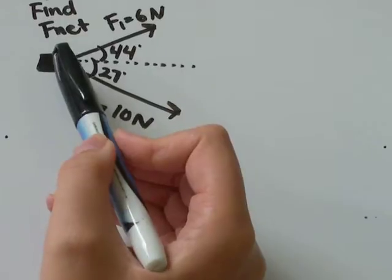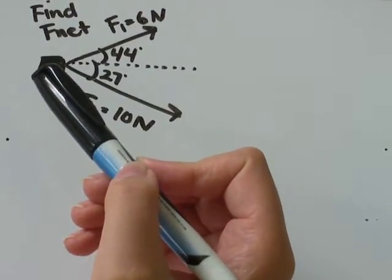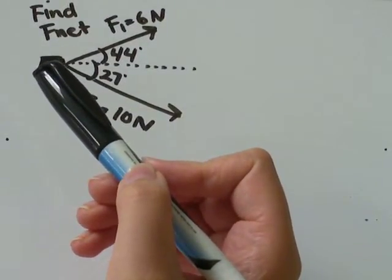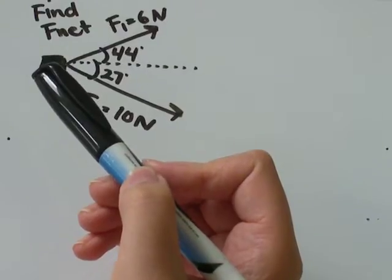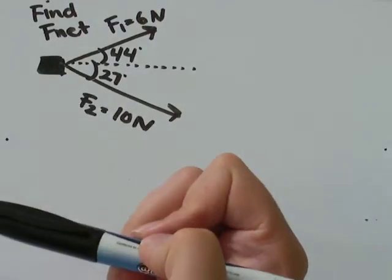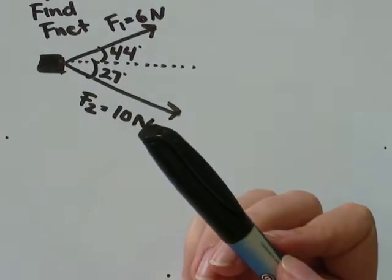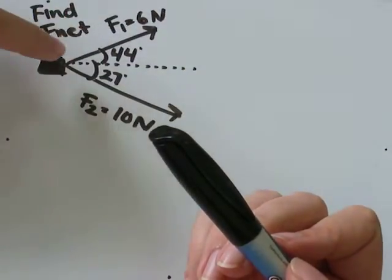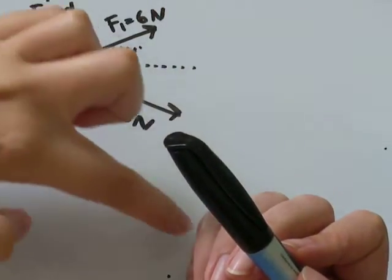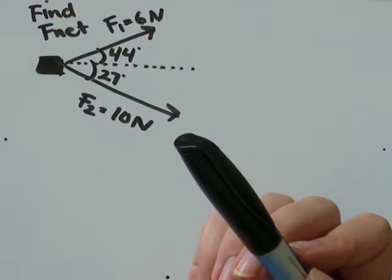And we're asked what is F net? What is the sum of all the forces affecting this object's travel and what direction is it going to end up moving? Is it going to go off this way? Maybe it'll go right down the middle? Maybe it'll go down here? That's what we're trying to figure out.